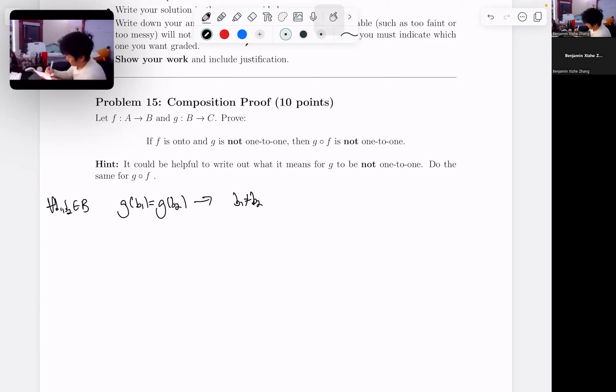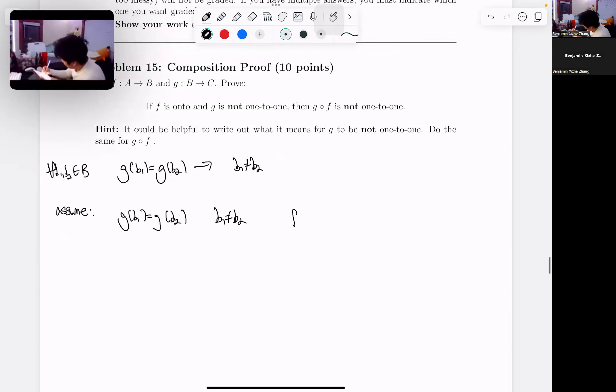So these are our assumptions, or things that we already know. g of b1 equals g of b2, and b1 does not equal b2. We also know that f is onto.